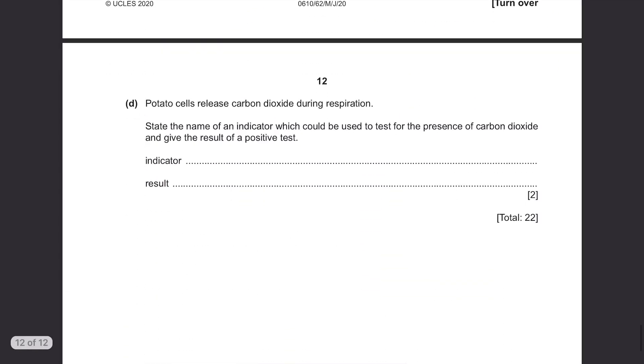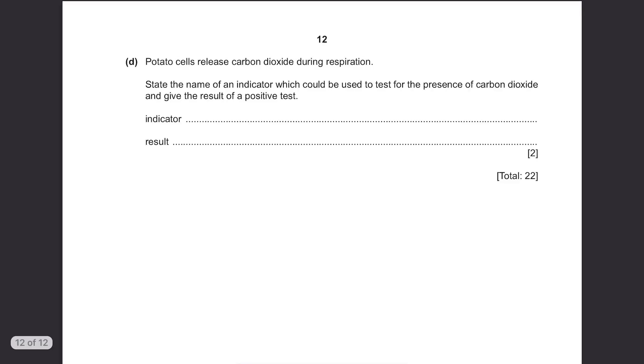Part D: Potato cells release carbon dioxide during respiration. State the name of an indicator which could be used to test for the presence of carbon dioxide and give the results of a positive test. What do we use to test the presence of carbon dioxide? There are two possible answers for this. One is hydrogen carbonate. It's gonna turn yellow in the presence of CO2. Then we have lime water. You'd have already known if you're taking chemistry. It becomes cloudy if CO2 is present.